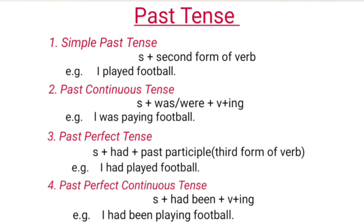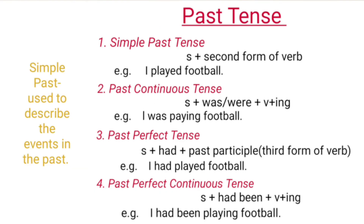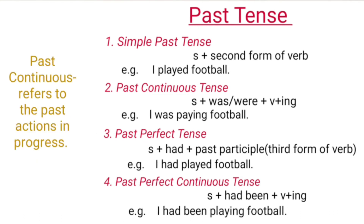The four types of past tense are: Simple past tense, Past continuous tense, Past perfect tense, and Past perfect continuous tense. Simple past tense is used to describe the events in the past. Its structure is Subject plus second form of the verb.